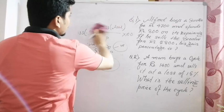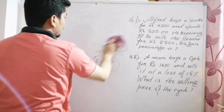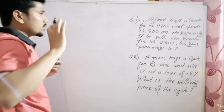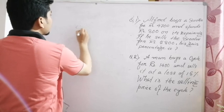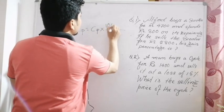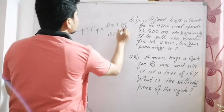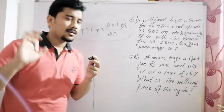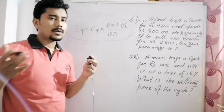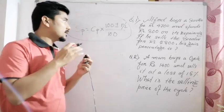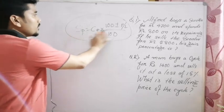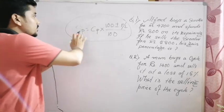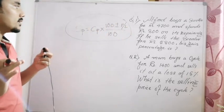The basic formula is what we have to memorize. This is the common formula. Profit equals selling price minus cost price. Loss equals cost price minus selling price. These are the key formulas. The cost price and the profit or loss together help find the unknown factor — whether it's selling price or cost price.